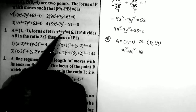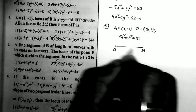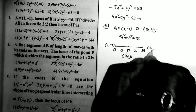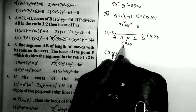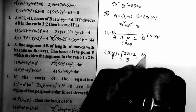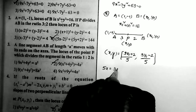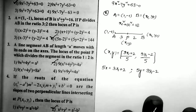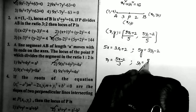The given condition is that P divides AB in the ratio 3:2. Suppose P = (x, y), A = (1, -1), and B = (x₁, y₁). Using the section formula: x = (3x₁ + 2·1)/5 and y = (3y₁ + 2·(-1))/5. Equating corresponding values: 5x = 3x₁ + 2 and 5y = 3y₁ - 2. From this, x₁ = (5x - 2)/3 and y₁ = (5y + 2)/3.